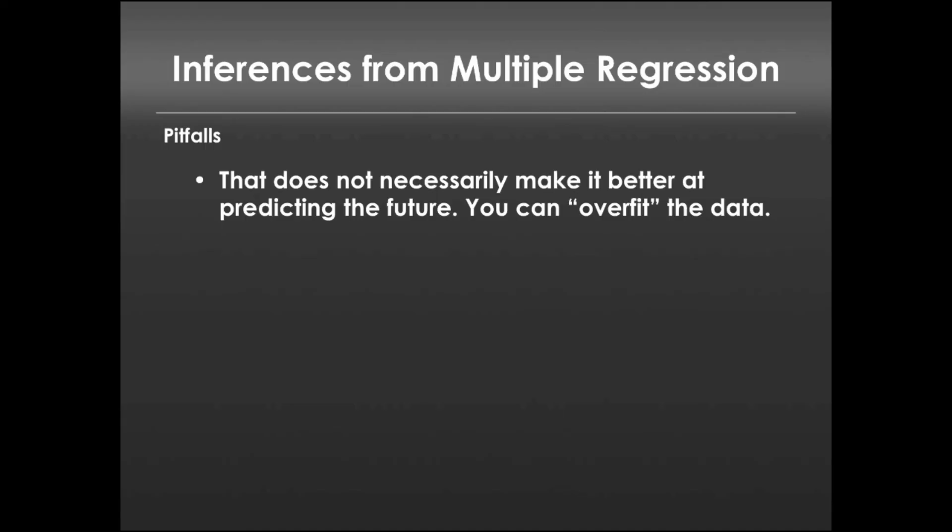Not to get too technical, I'll keep this light, but bad things tend to happen when our predictors are strongly related to each other. This is something that is known as multicollinearity, and we're actually just not going to have the capacity to cover it in this course.